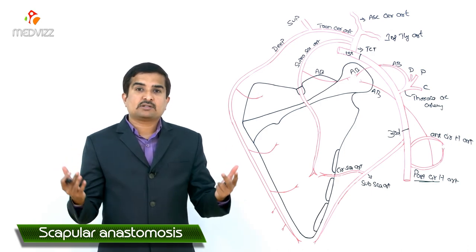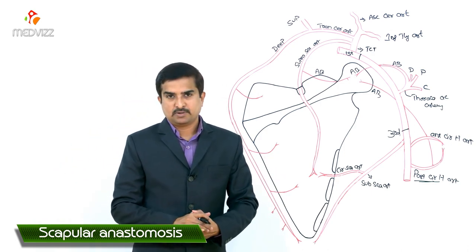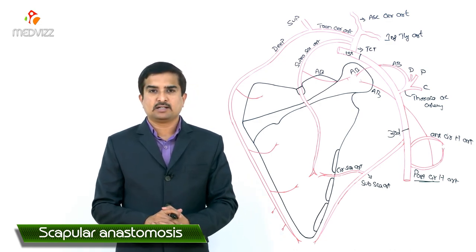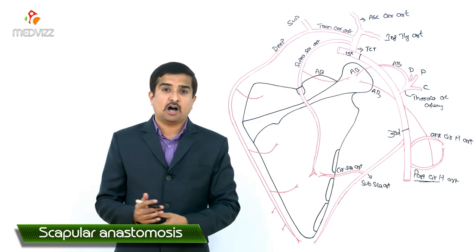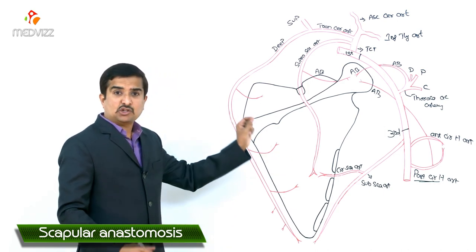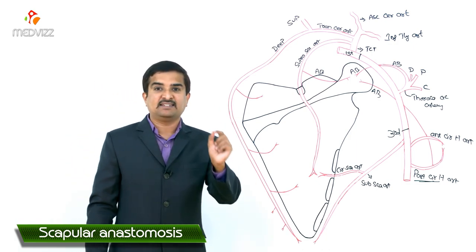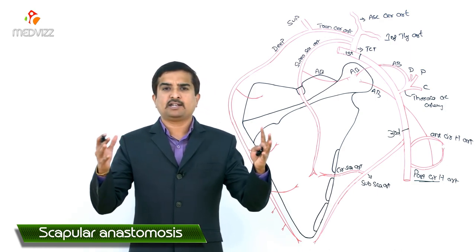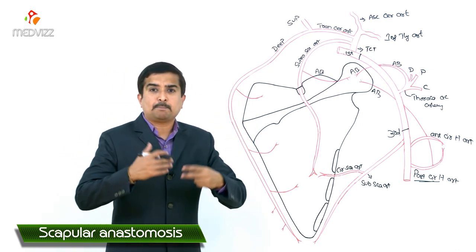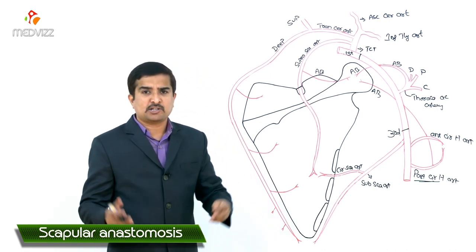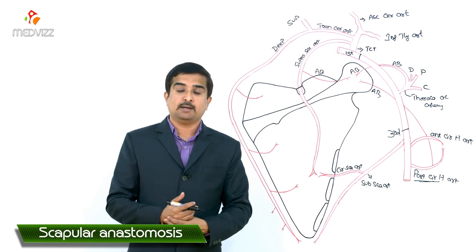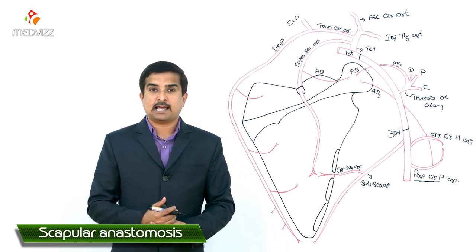This is the anastomosis around the scapular body as well as the acromion process. The clinical importance of this scapular anastomosis is significant: if the subclavian and axillary arteries were blocked anywhere between the first part of the subclavian artery and the third part of the axillary artery, this scapular anastomosis acts as an important collateral circulation pathway to ensure adequate circulation and nutrition to the upper limb. This is why the scapular anastomosis is extremely important to know.